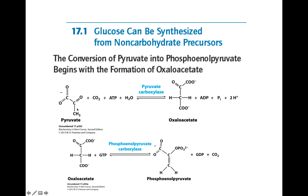In the first step, we take pyruvate, add ATP, release ADP and water, forming oxaloacetate — a four-carbon molecule. Then oxaloacetate is converted using GTP as the energy source, releasing GDP and CO2, to form phosphoenolpyruvate, which is a three-carbon molecule. So we add a CO2 to get the four-carbon oxaloacetate, then release that CO2 again to produce the three-carbon PEP.